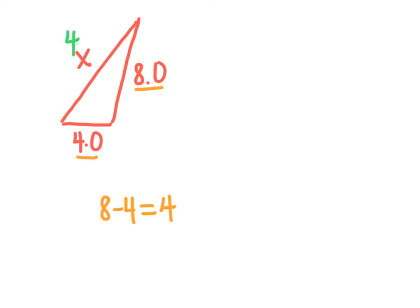Next, I'm going to see what the highest it can be is. To figure that out, you just add the two sides. So eight plus four equals twelve. If I wanted to see if twelve actually works — if I add the two smaller sides together, eight and four, that is twelve. So it's not bigger than the third side, so it has to be smaller than twelve. So any number between four and twelve will work.